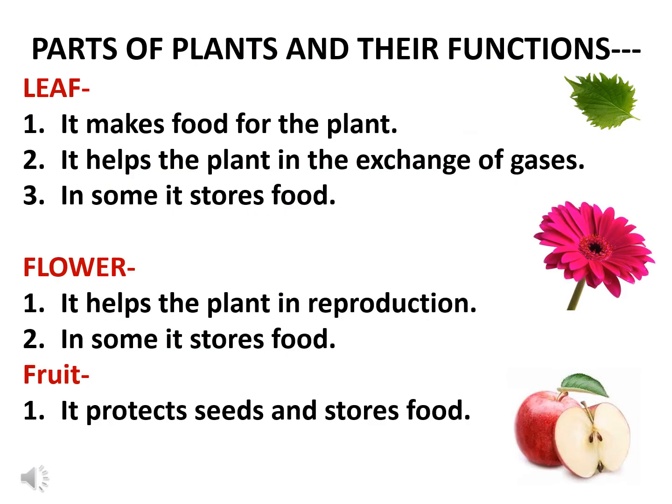Leaf is one of the most important parts of the plant. It is also known as the kitchen of the plant, as it makes food for the plant. It also helps the plant in exchange of gases. Some leaves also store food. Flowers help in reproduction in the plant, and some of them also store food. Fruits protect the seeds and store food for the plant.